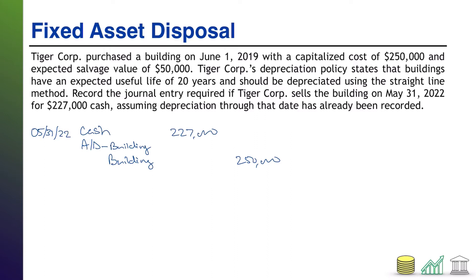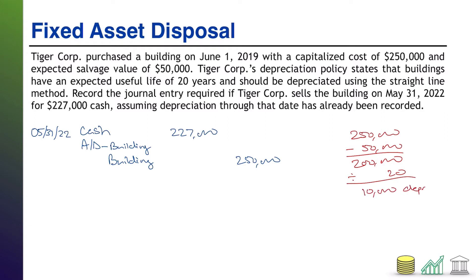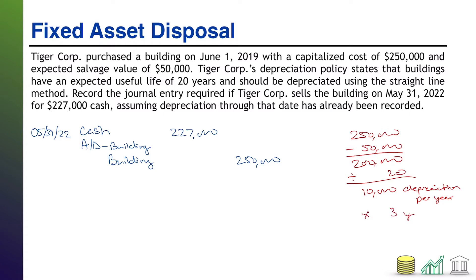We had a capitalized cost of $250,000, take out the salvage value of $50,000 — the portion you don't expect to use up — giving a depreciable cost of $200,000. With a useful life of 20 years, depreciation is $10,000 per year. Since we're selling on May 31, 2022, we are exactly three years from the June 1, 2019 purchase date. So three years times $10,000 gives us $30,000 of accumulated depreciation to remove.